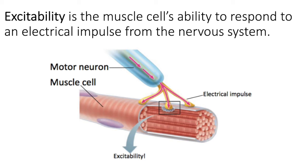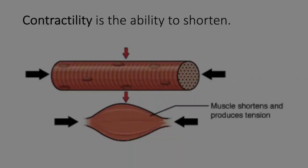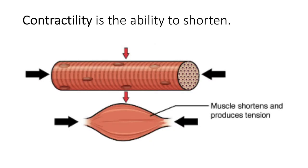Once muscle cells are excited, they are stimulated, and then a series of biochemical reactions will occur within the cell that causes it to contract. And that leads us to our next property, which is contractility.